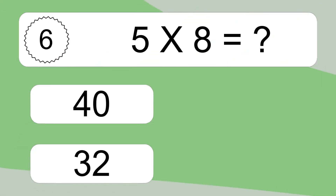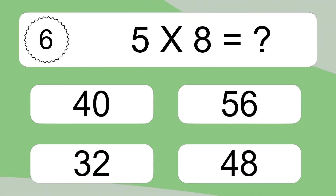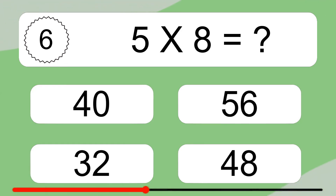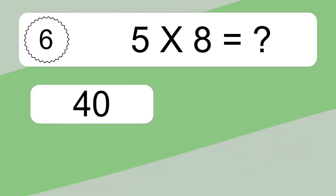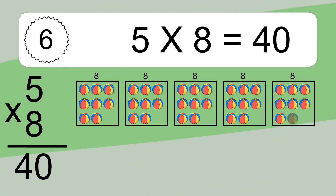5 times 8 equals what? 5 times 8 equals 40.